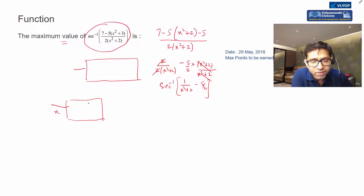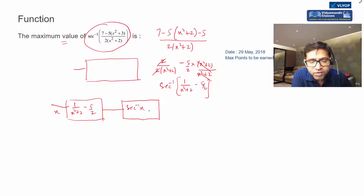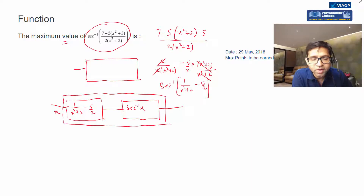So x maps into 1/(x² + 2) − 5/2. I will find the range of this inner function, and then plug it into secant inverse. For the composite function, once I find the range of this inner part, the range of the entire composite function will give me the maximum value.